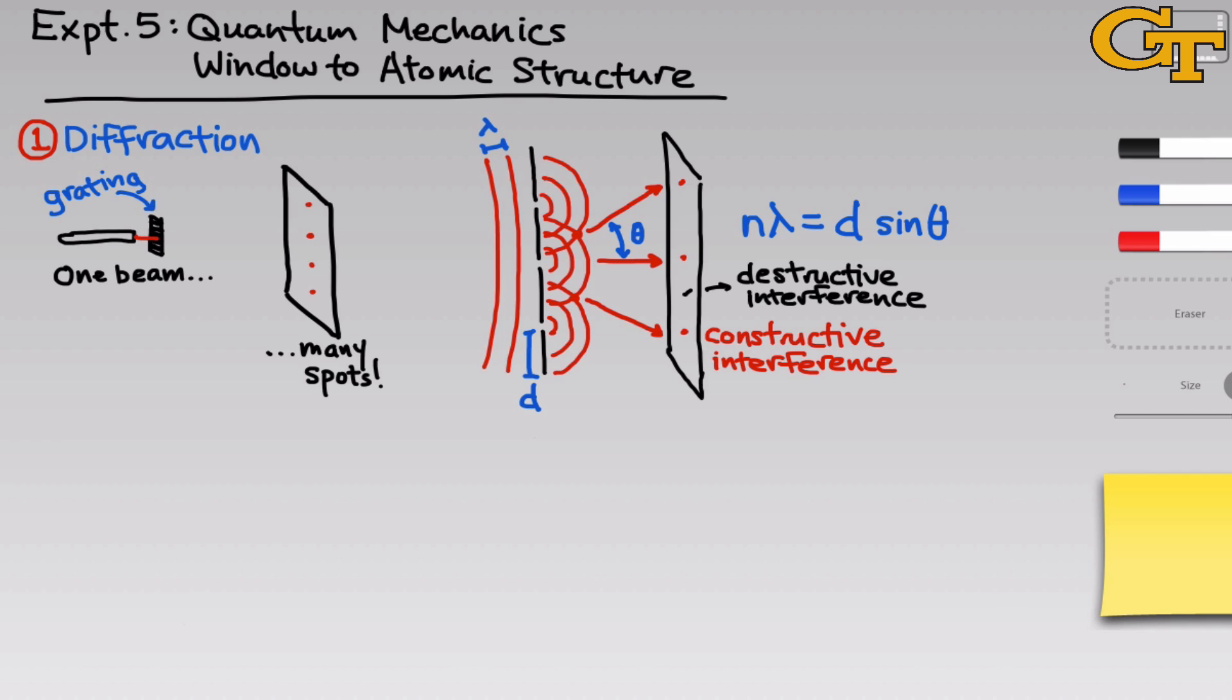But notice what it allows us to do. If we know lambda, the wavelength of the light, which we will because we'll be using a laser that has a standard wavelength, and we know the angle, which we can measure using a little bit of trigonometry and measurements of the distance between spots and the distance between the grating and the wall, then we can determine D, the microscopic distance between slits, which is far too small to actually measure empirically.